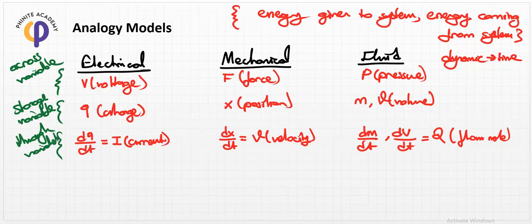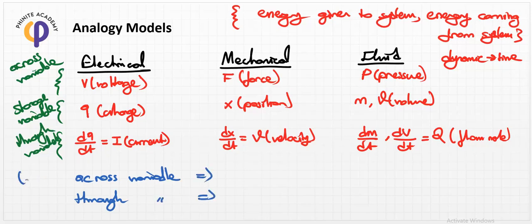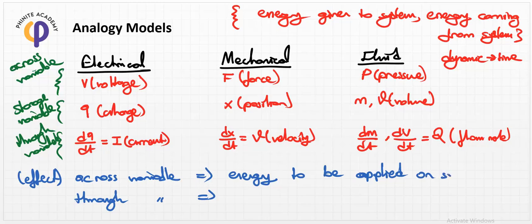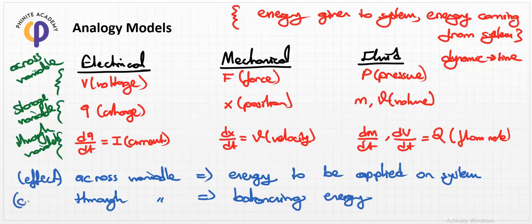In summary, this table classifies two quantities: the across variable and the true variable. The across variable is the effective input parameter applied to the system — the input energy. The true variable is created for balancing the energy coming from outside, meaning it enforces the conservation rule.